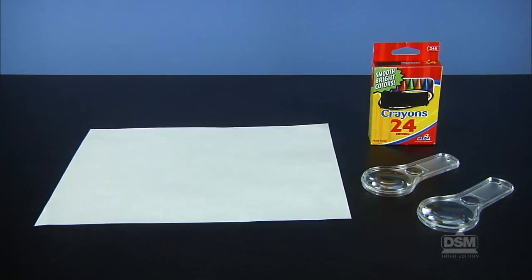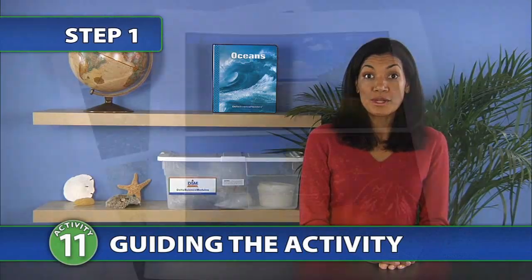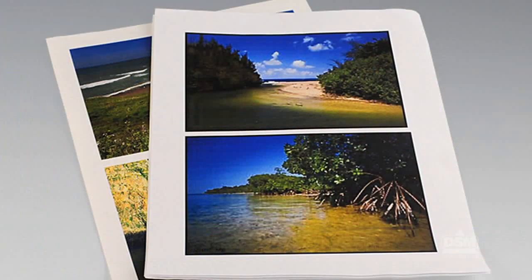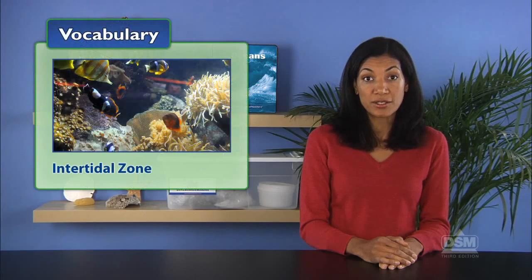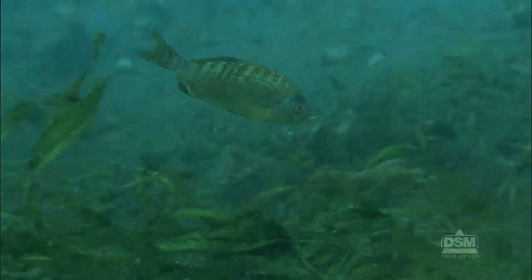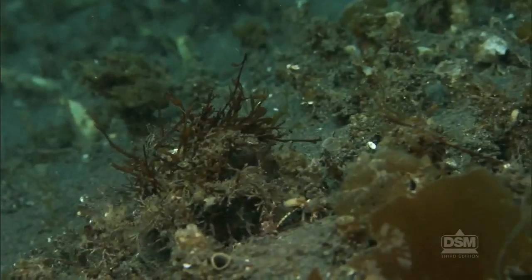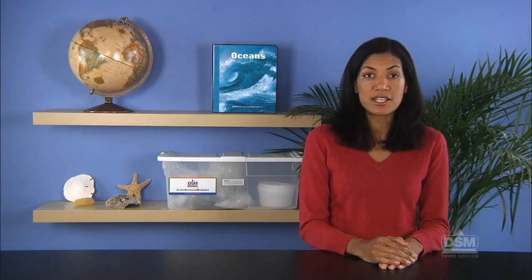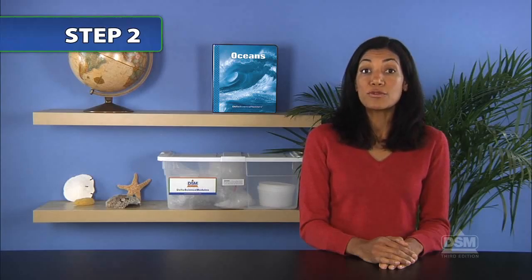You may also want to buy clams or mussels to show students what the animal looks like inside its shell. Each team will need two magnifiers, a box of crayons, and a sheet of white paper on which to place the shells. To begin the activity, distribute the pictures of coastal areas and have students describe the types of shorelines.